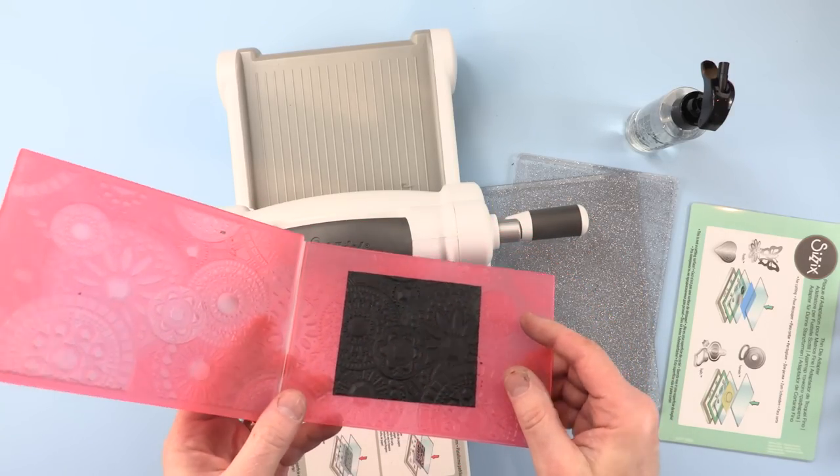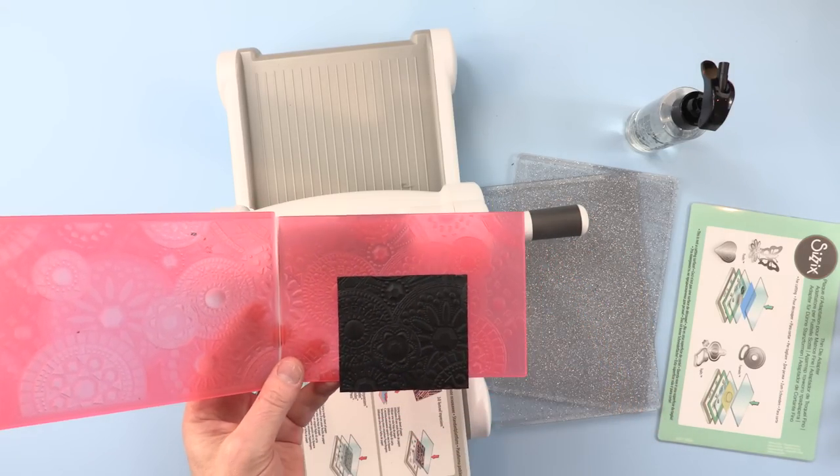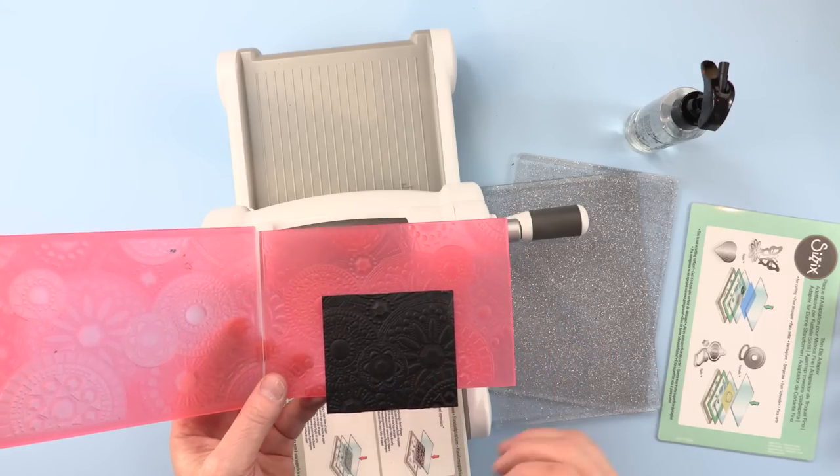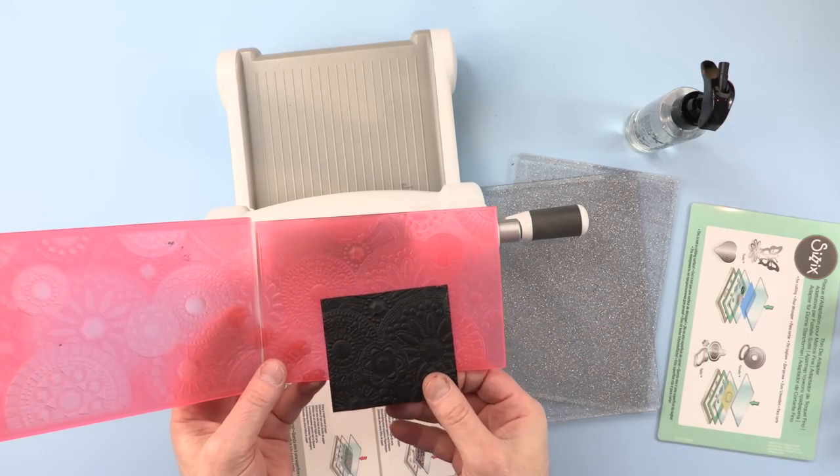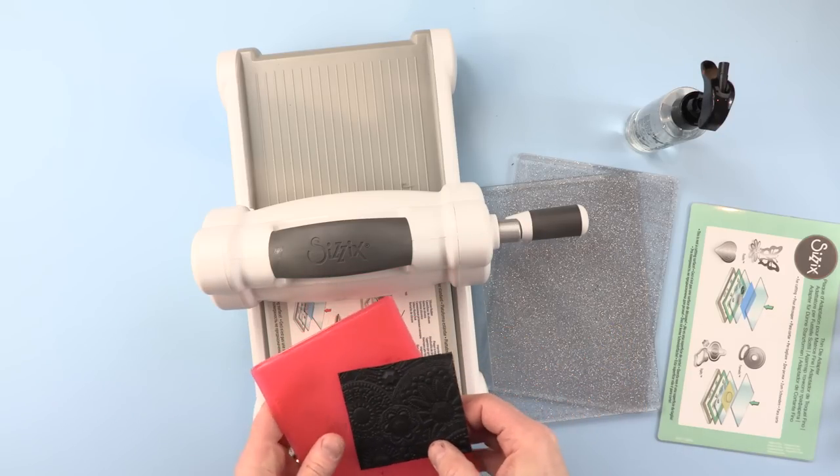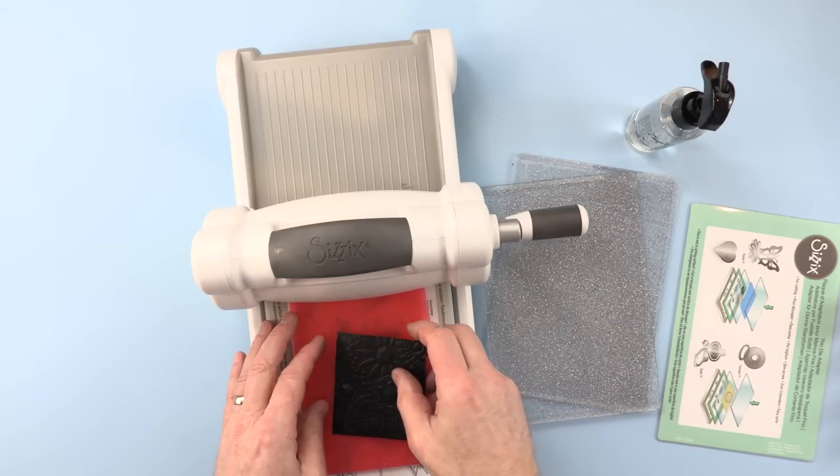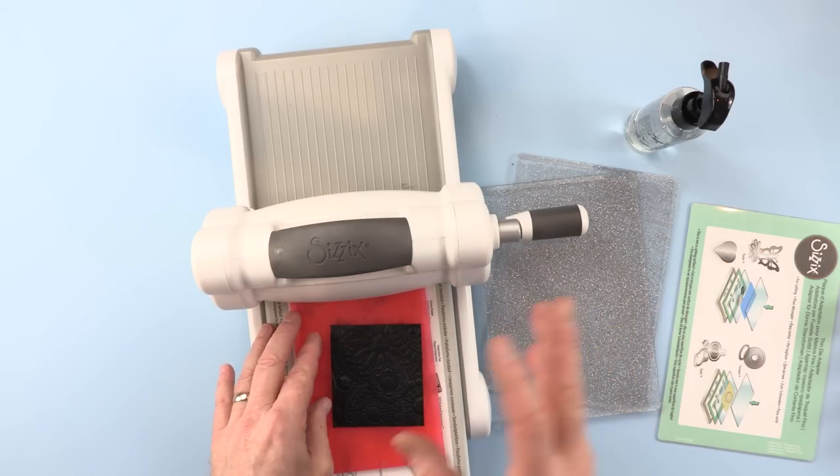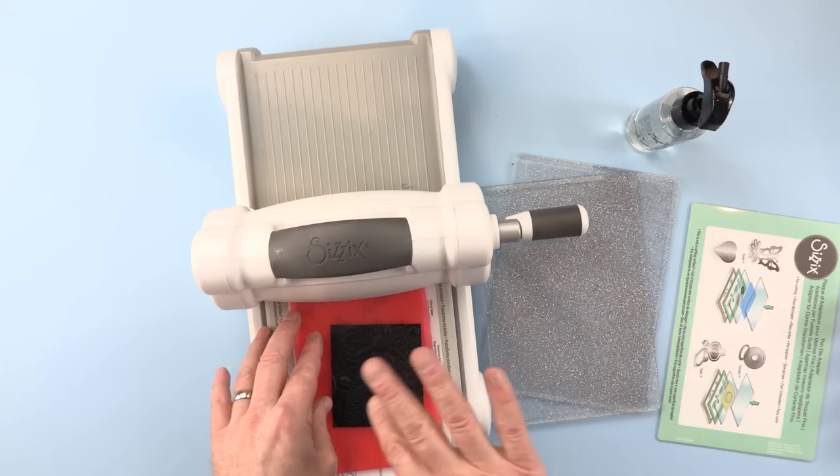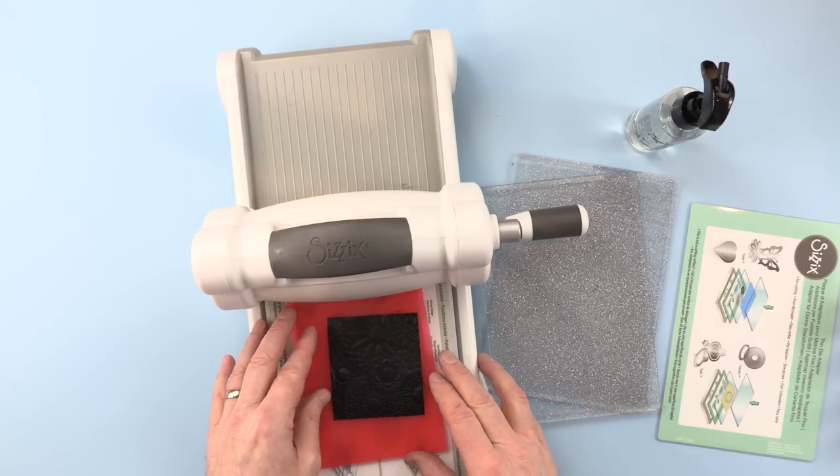Right and there we have it. There's our black card embossed. I know you can't see much now and that's why we're going to apply different techniques to bring out this emboss. So we'll just leave that, set it aside to dry. If I use a heat tool with this, it will tend to curl. I don't want that. I'm going to let it dry naturally.